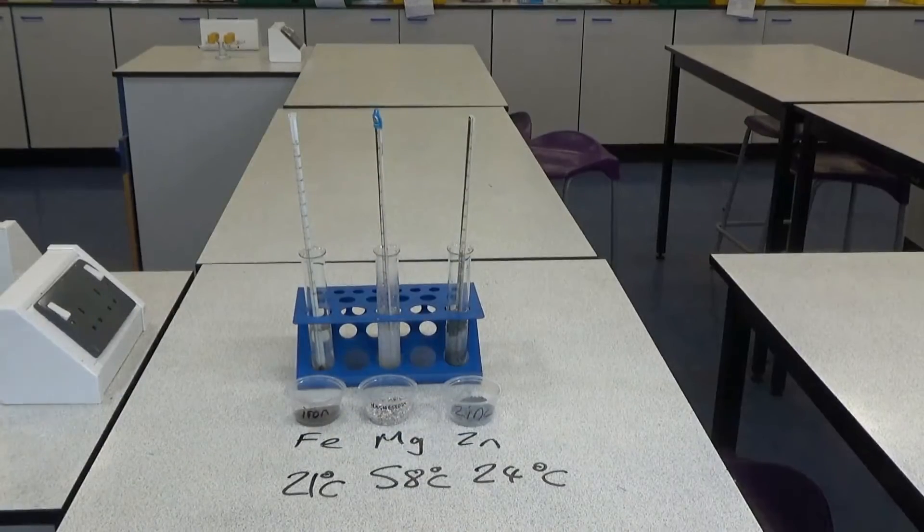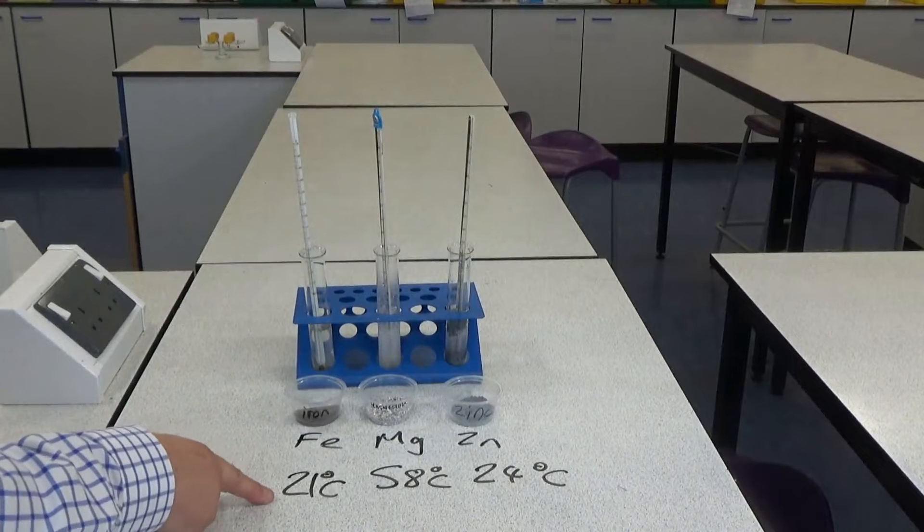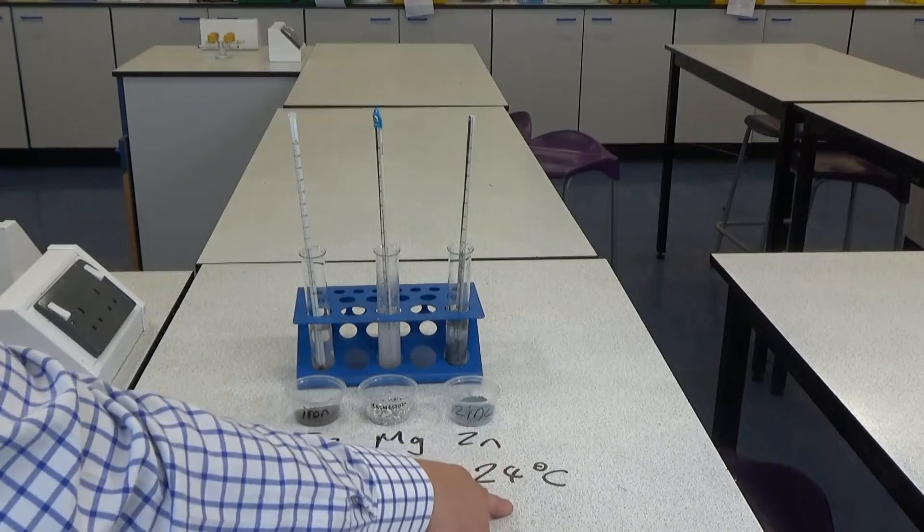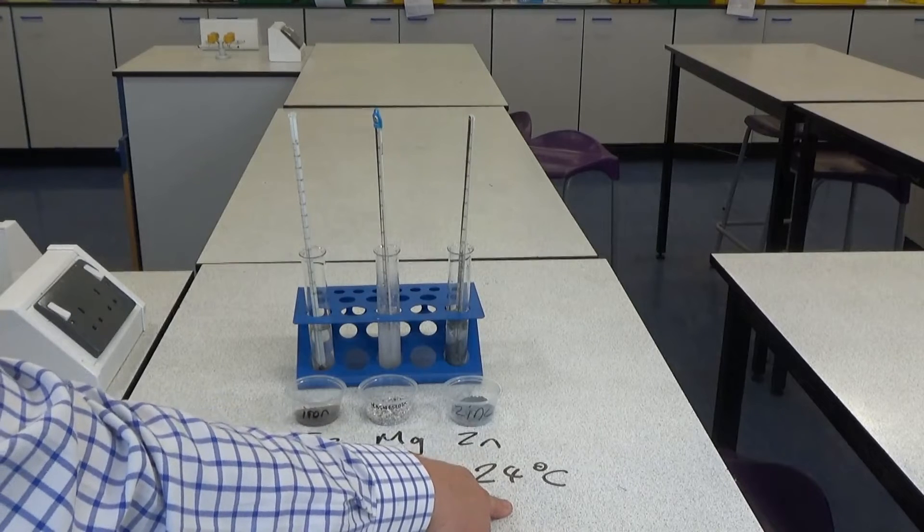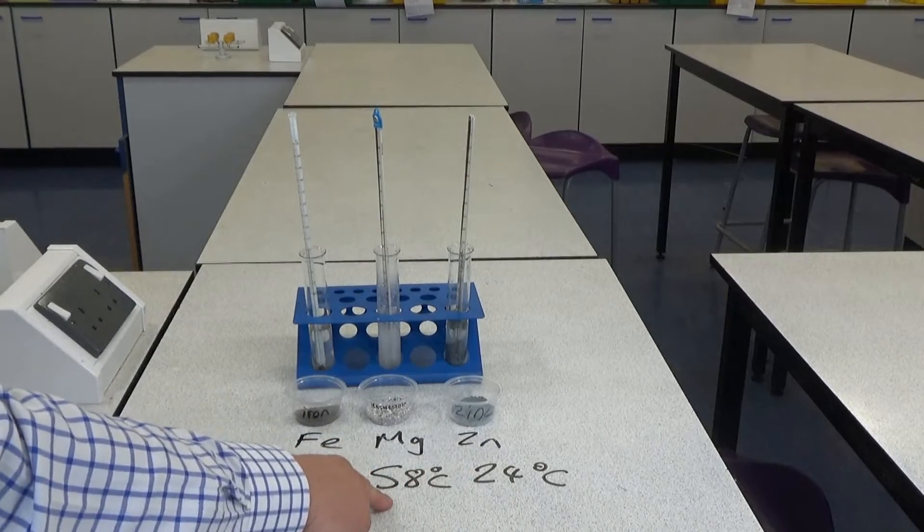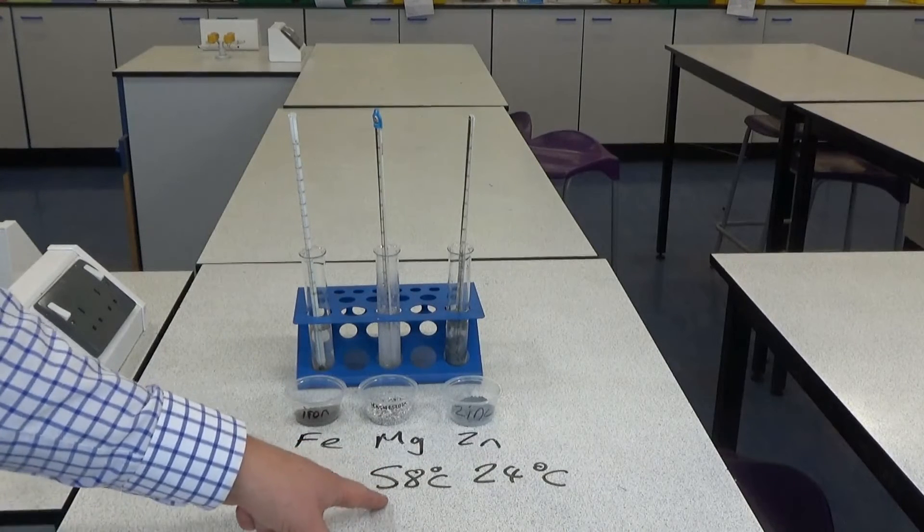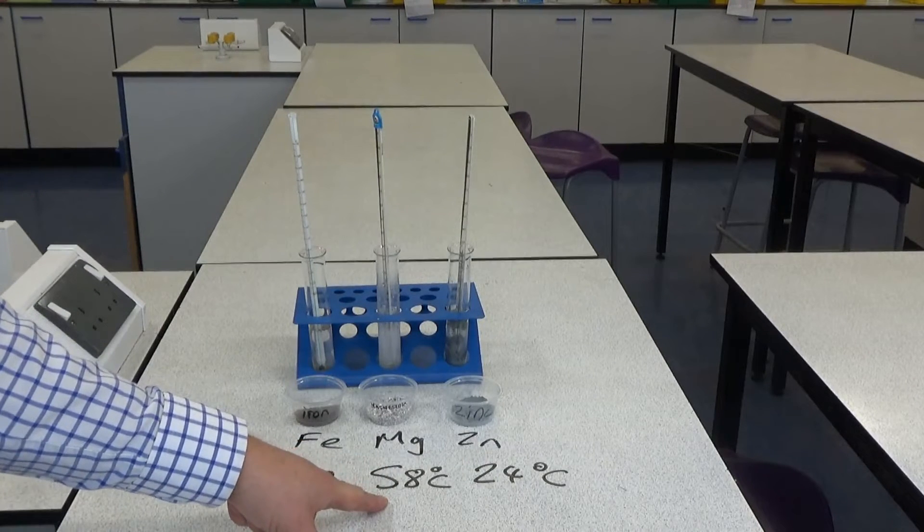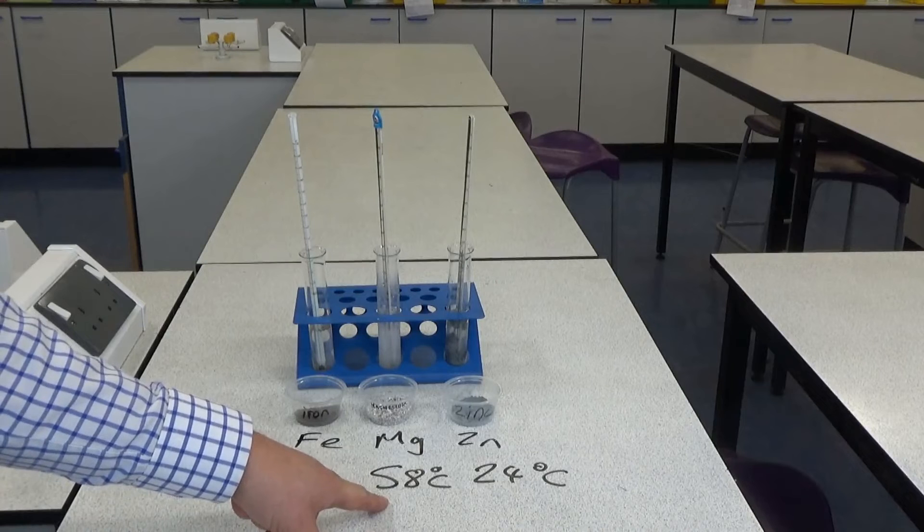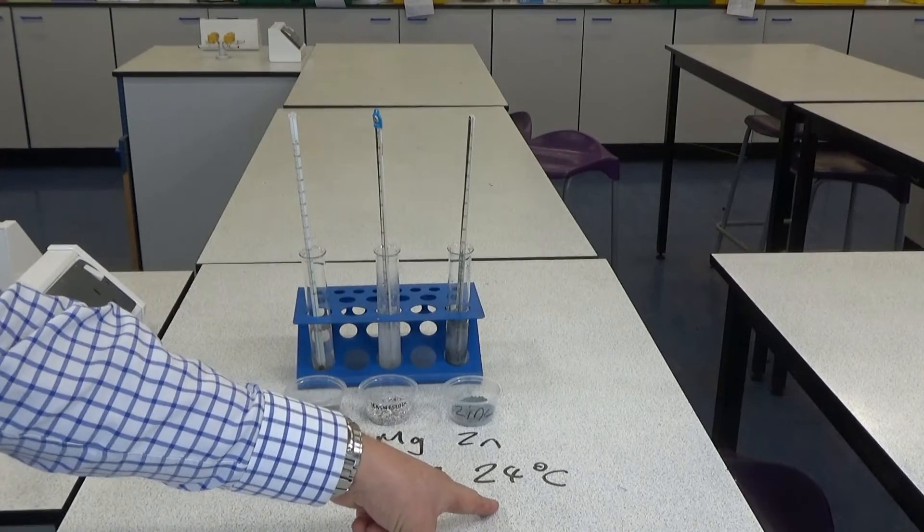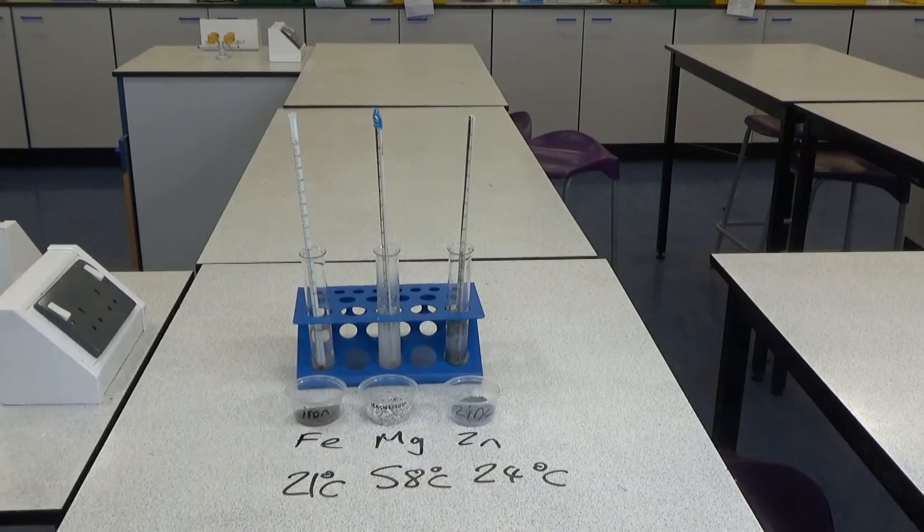I've now read each of the thermometers. The iron's temperature has increased to 21 degrees from 20. The zinc has increased from 20 to 24 degrees and the magnesium has shot up to 58 degrees. So again this backs up the idea that magnesium is the most reactive out of the three because it gave the biggest temperature change and the two we couldn't quite tell. We can now see that zinc has the highest temperature change out of the other two so that is more reactive than iron.